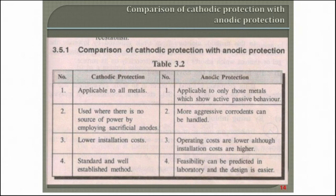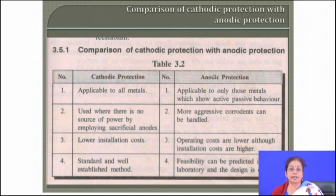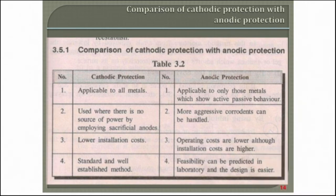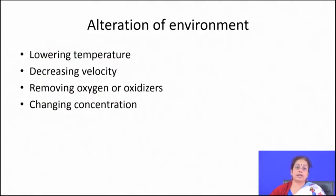Anodic protection can only be applied to materials that undergo active-passive transformation, but more aggressive corrodents can be handled. Operating costs are lower in anodic protection, although installation cost is higher, while cathodic protection always has lower cost overall. Cathodic protection is a standard, well-established system and highly versatile and can be widely used for all kinds of materials.